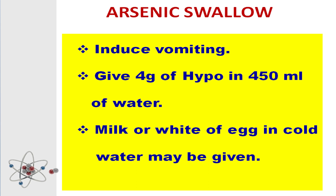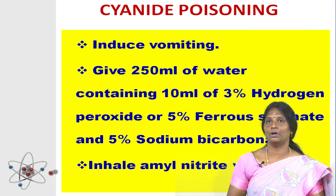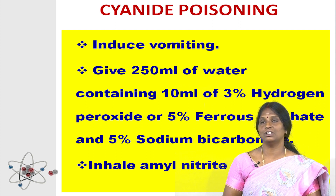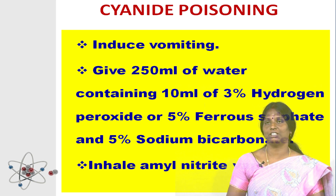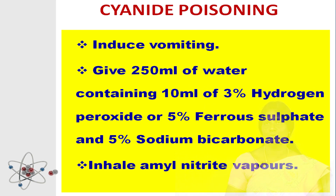Then 5 ml of milk of magnesia or milk or white of egg can be given to the victim. Next, if we swallow copper compounds, we have to induce vomiting first, then give 100 ml of sodium hydrogen phosphate solution to the victim, then take the victim to the doctor. Next, cyanide — this is very important. When we accidentally swallow cyanide, speedy first aid is needed: induce vomiting, then give 250 ml of water containing 10 ml of 3% hydrogen peroxide, or 250 ml of freshly prepared solution containing 5% ferrous sulfate and 5% sodium bicarbonate.